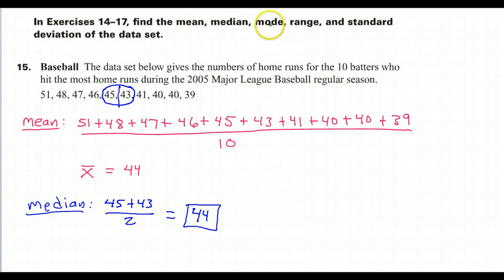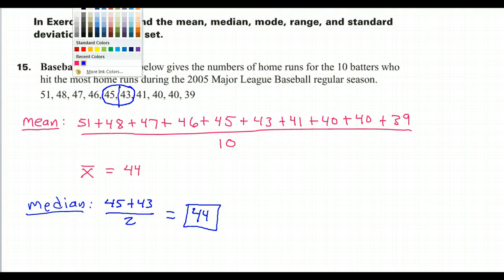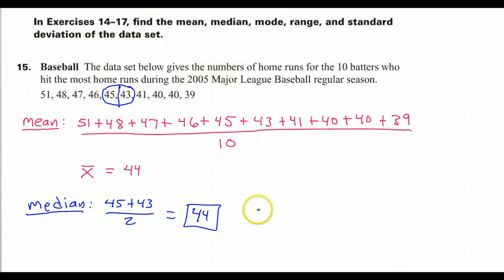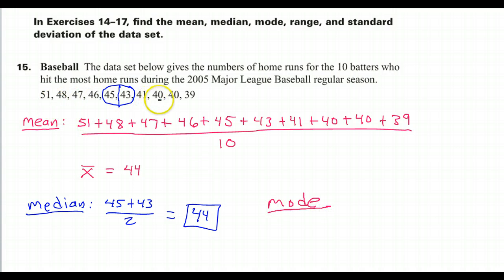Now we're supposed to find the mode. Remember that the mode is the number that repeats the most often. Scanning through here, only one number repeats at all, and that's 40. 40 occurs twice, so the mode is going to be 40.